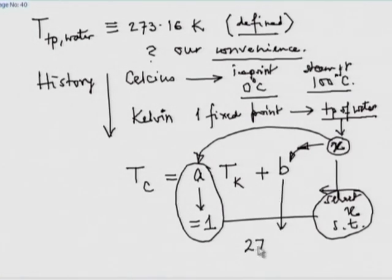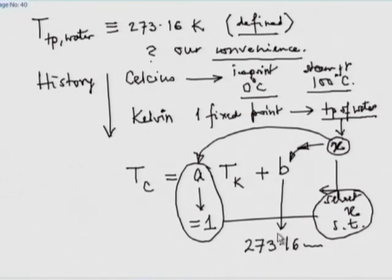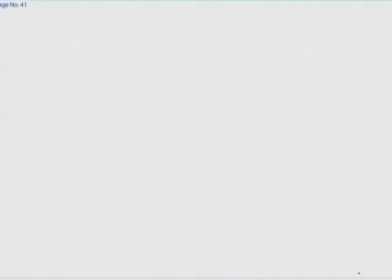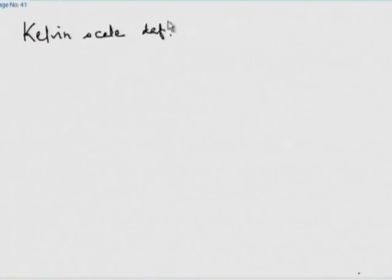Since measurements could be made precisely to about 0.01°C at that time, it was decided to define the triple point as exactly 273.16 K. This gives T_Celsius = T_K - 273.16 as the definition of the Celsius scale. The consequence is that the ice point is approximately 273.15 K and the steam point is approximately 373.15 K — both almost but not exactly round numbers.